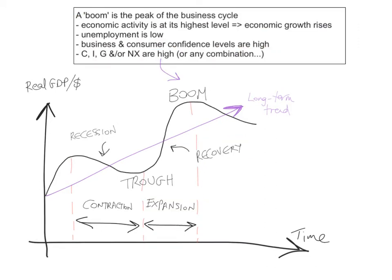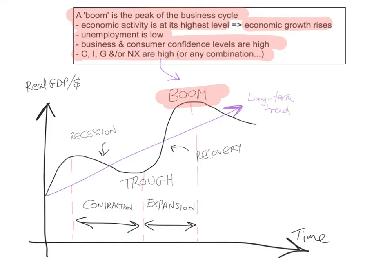Nothing bad lasts forever, but also nothing good lasts forever. Eventually the economy reaches a boom — the peak of the business cycle. Economic activity is at its highest level, economic growth rises, unemployment is very low, and consumer and business confidence levels are very high. This can lead to inflation, because C, I, G, and net exports, or any combination of them, are very high. During booms, economies often suffer from inflation because there's an increase in aggregate demand greater than aggregate supply, causing price levels to rise. This is the end of the expansion phase of the business cycle.